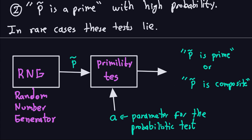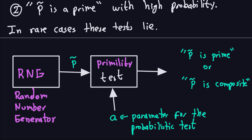The test outputs either 'p is prime' or 'p is composite.' Because this is a probabilistic primality test, the composite answer carries 100% certainty, while the prime answer carries only a high probability.